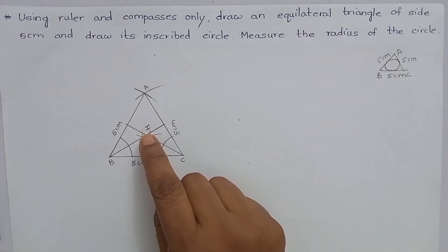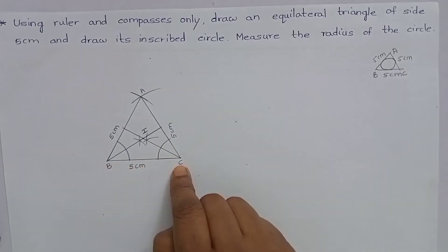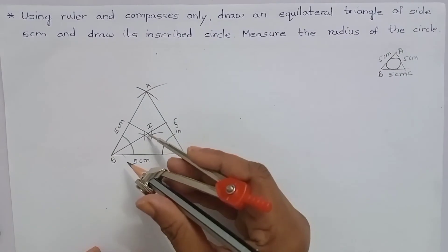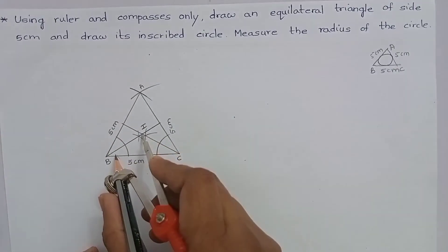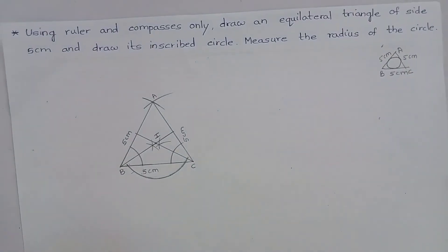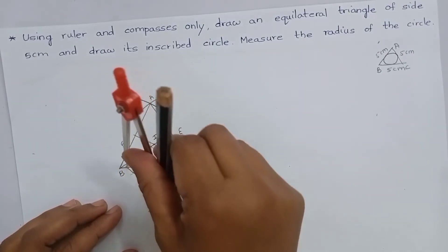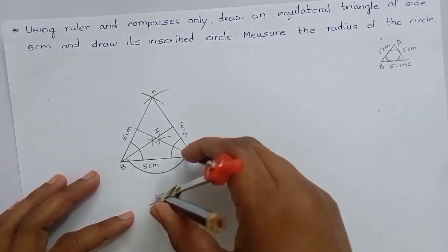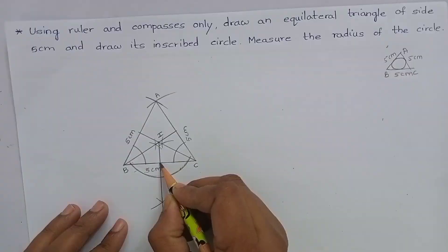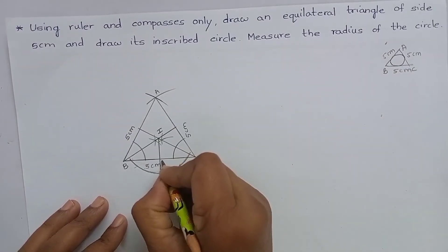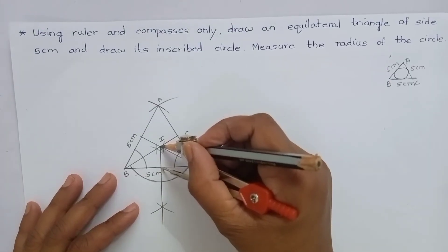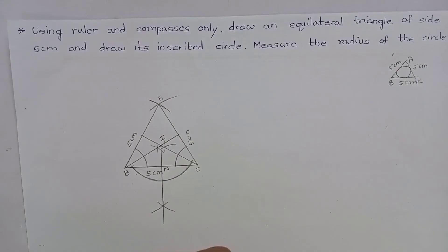From point I, draw a perpendicular line on side BC. Keep the compass at point I and mark an arc on side BC. Cut arcs from the intersection points and join them to get the perpendicular foot. Name this point as N. Keeping IN as radius, draw a circle so that it touches all sides of triangle ABC.